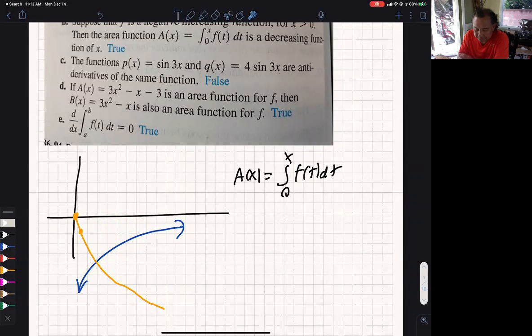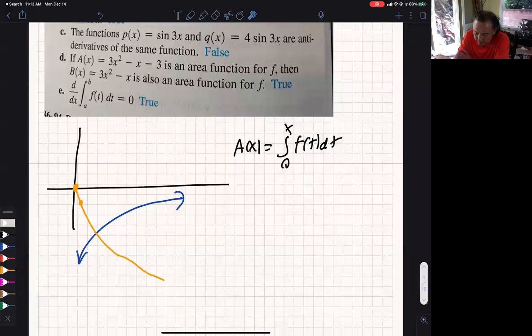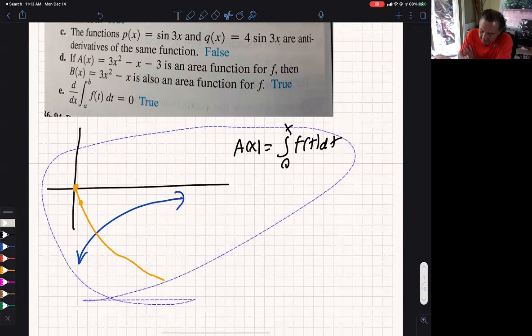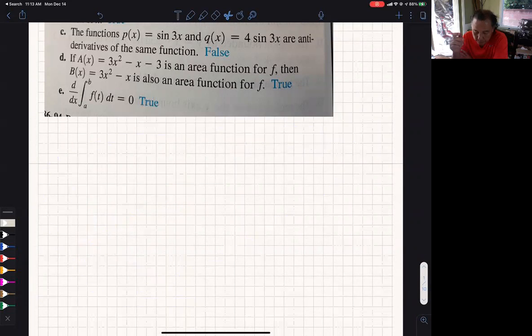Part C. Let's read part C. So part C says, the function P(x) equals sine 3x and Q(x) equals 4 sine 3x are antiderivatives of the same function. Wow.